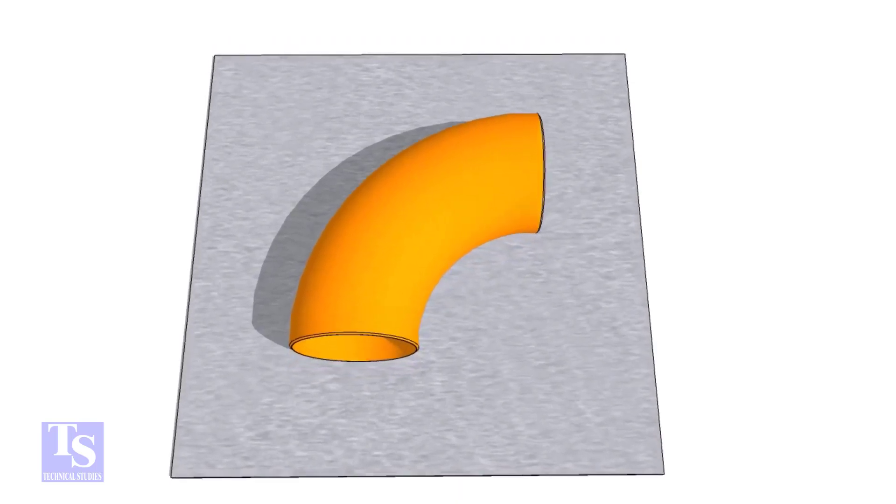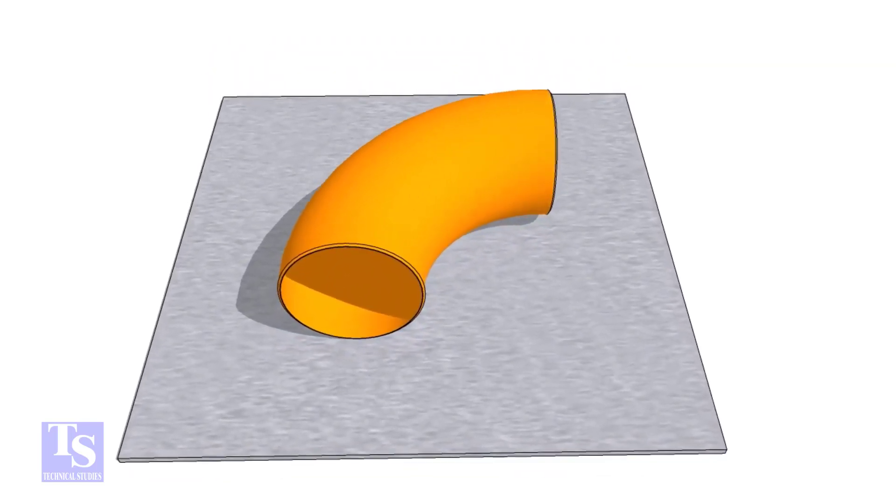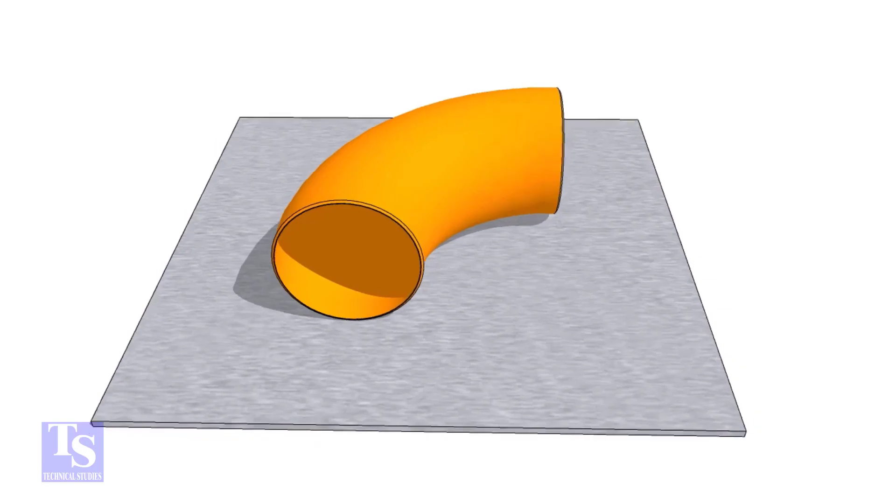First of all, choose a leveled plate and put the elbow on it. Check the outer diameter of the elbow.